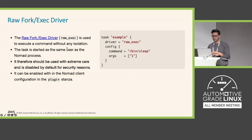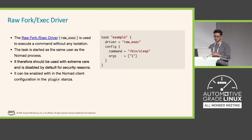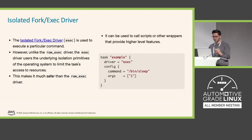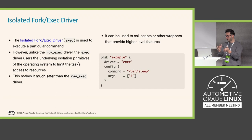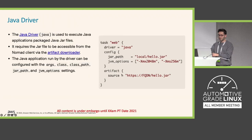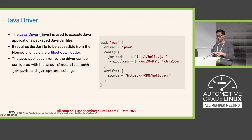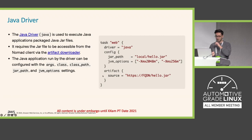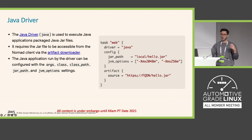The raw exec driver means the workload will not be containerized or isolated — you can run something on a device without isolation. There is also an isolated variant that uses the underlying isolation primitives of an operating system. You can set how that looks and then execute commands there. The Java driver allows you to set any configuration needed for the JVM or JRE when starting that application, and it uses an artifact setting where the source can be downloaded directly on the target and then executed — with options to download from trusted sources and verify the JAR before executing.